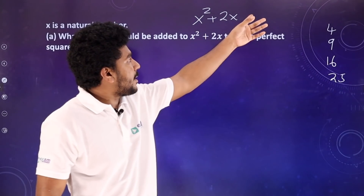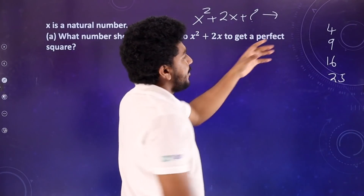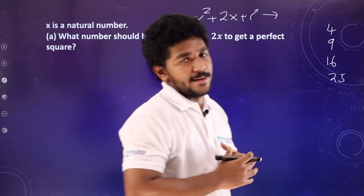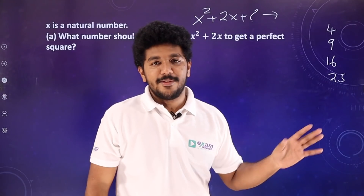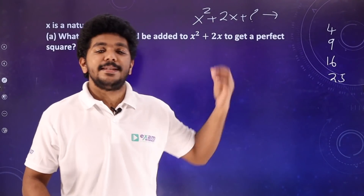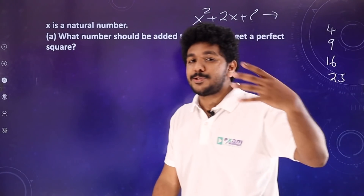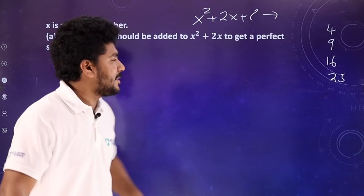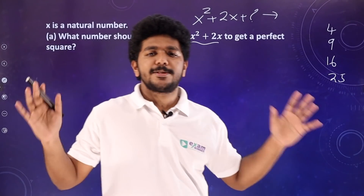If you add any number to x² plus 2x, you will have to add a specific number to make it a perfect square. What is the requirement to add any number to make it a perfect square? It will be a perfect square.